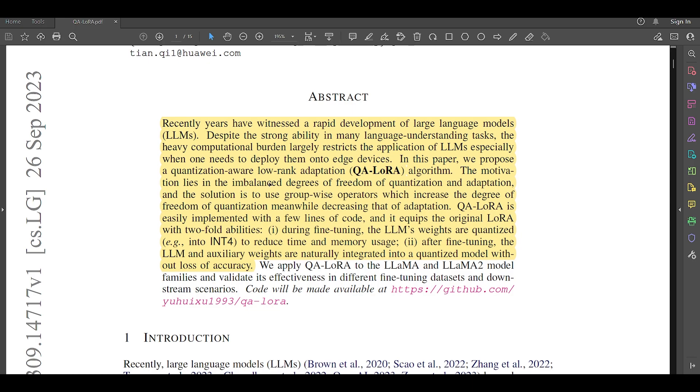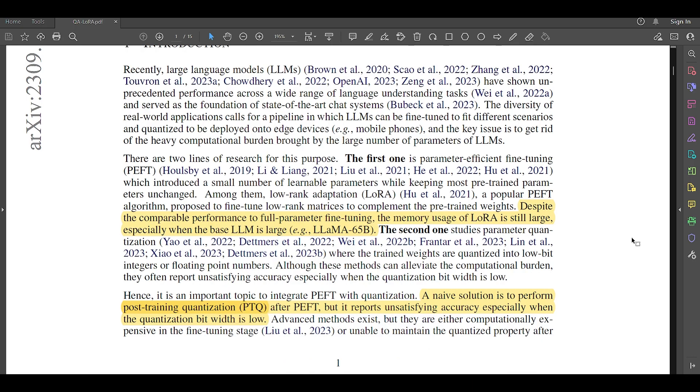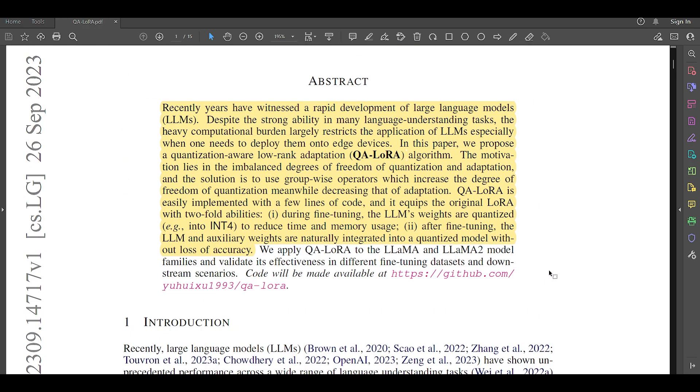Now, let's go back to this particular phrase they have used, the imbalanced degree of freedom of quantization and adaptation. So, there is a contrast or there is a subtle fight between these two terms that they have mentioned. So, let's understand what they are actually. So, the term degree of freedom in this context refers to the extent to which certain parameters or variables can change during the process of quantization and adaptation. Essentially, it denotes the flexibility or variability allowed in this process. And quantization is a method to map a large set of values like floating-point numbers to a smaller set like integers to save memory and computation.